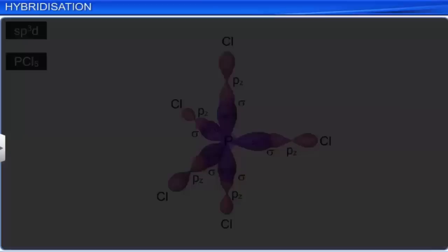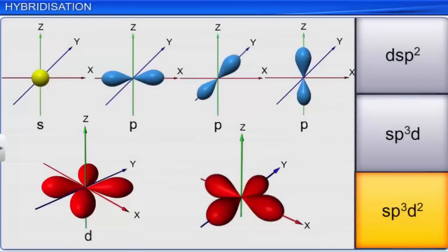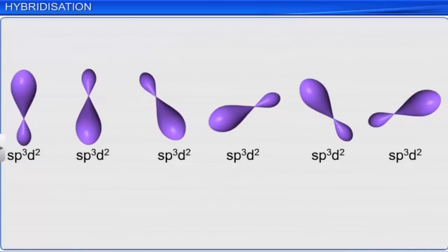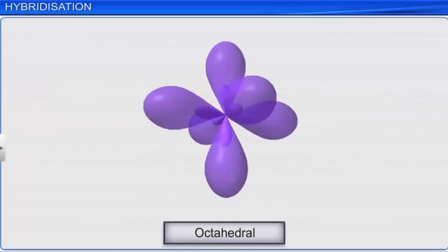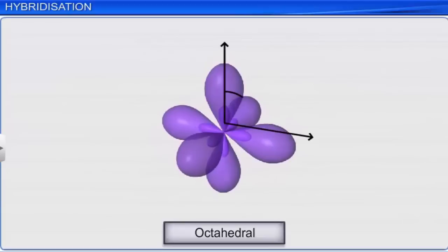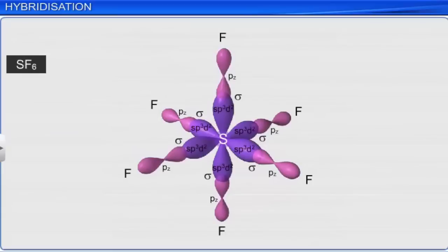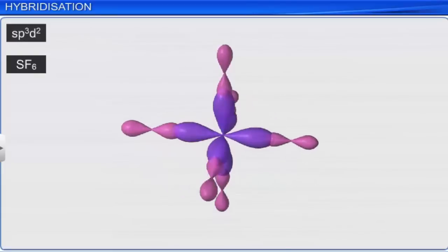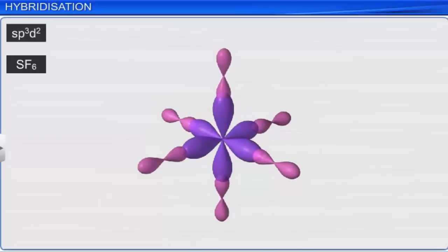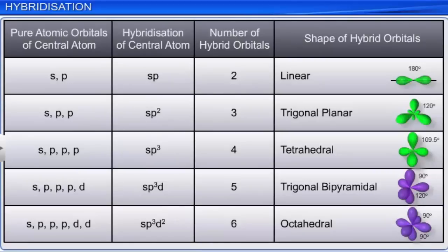In SP³D² hybridization, one S orbital, three P orbitals, and two D orbitals combine to form six SP³D² hybrid orbitals of equivalent energy. They have an octahedral arrangement with a bond angle of 90 degrees between the orbitals. The central atom sulfur in SF₆ displays SP³D² hybridization. Thus, hybridization explains the characteristic geometrical shapes of polyatomic molecules.